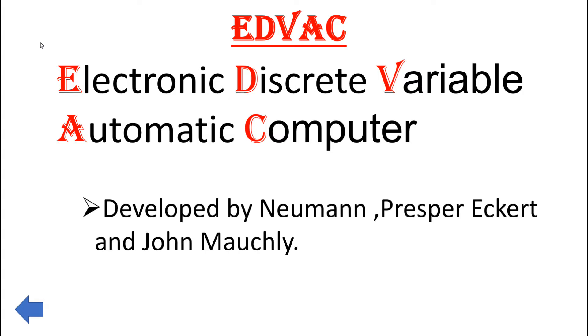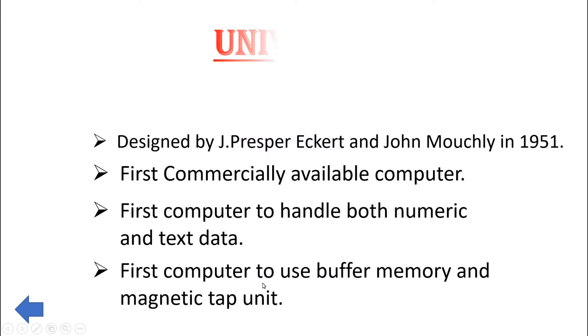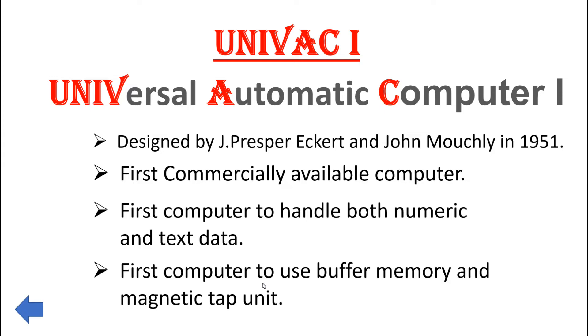Presper Eckert, and John Mauchly. The next computer system invented after EDVAC is UNIVAC 1. Let's see UNIVAC 1 in detail. The full form of UNIVAC 1 is Universal Automatic Computer 1. It was designed by